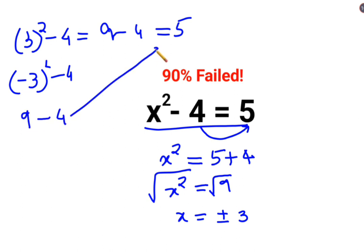So 9 minus 4 that also gets us 5. So here we can say the value of x is either plus or negative 3.